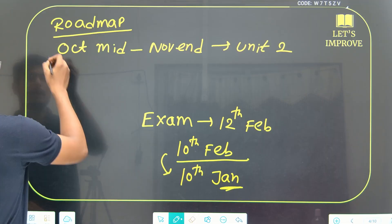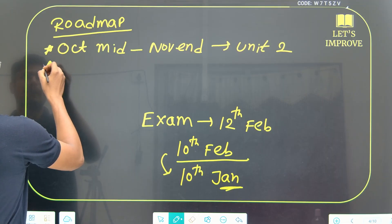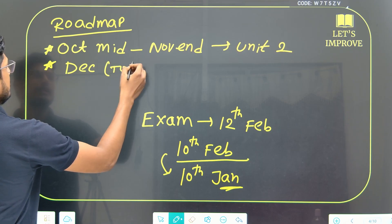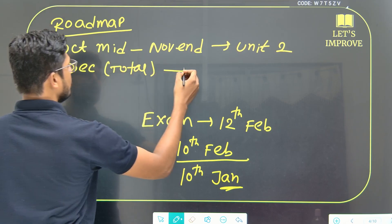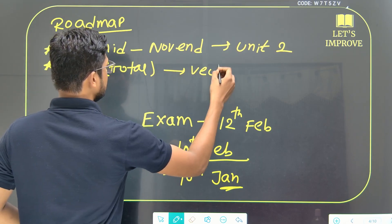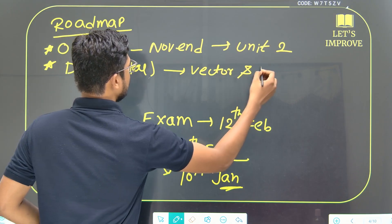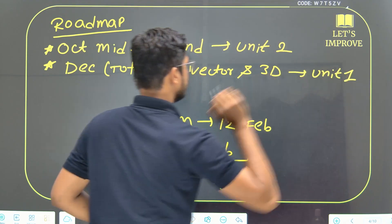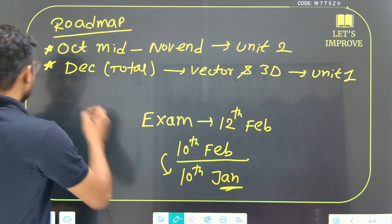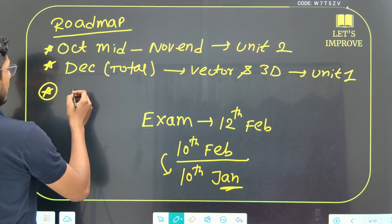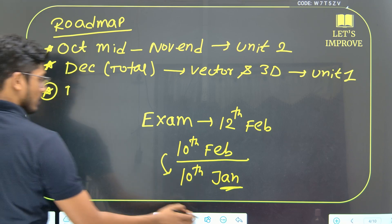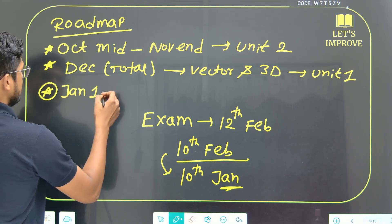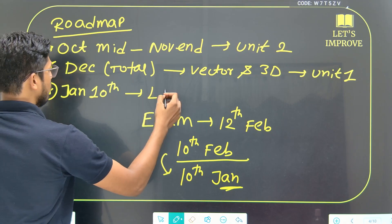The whole month of December, you can do Vector and 3D — that is Unit 1. And lastly, by January 10th, you complete the LPP data.